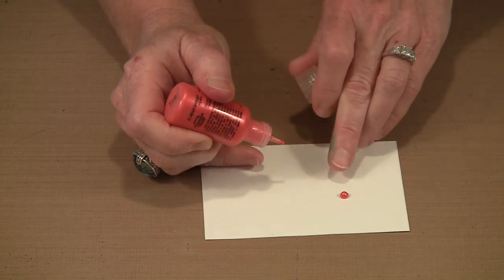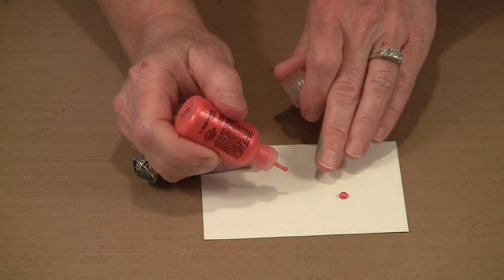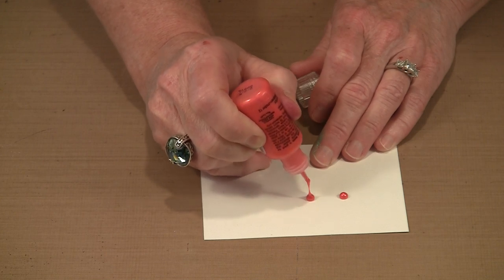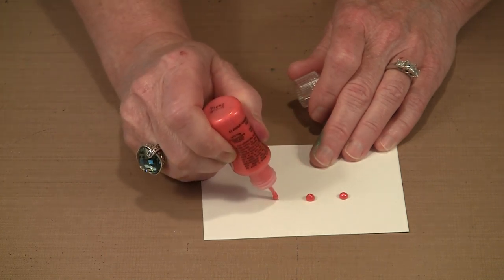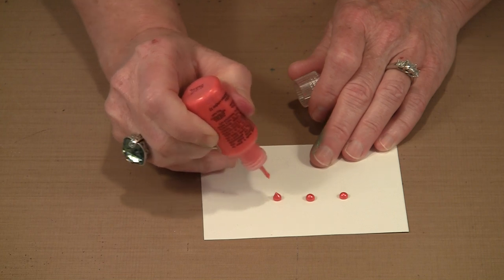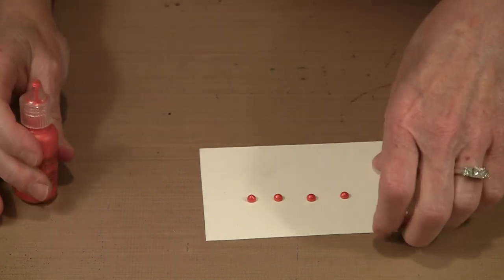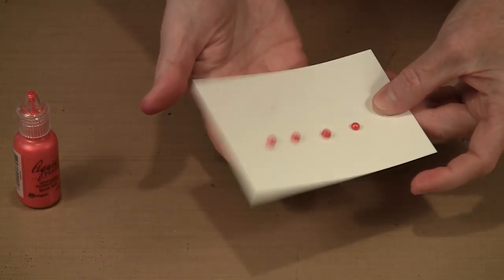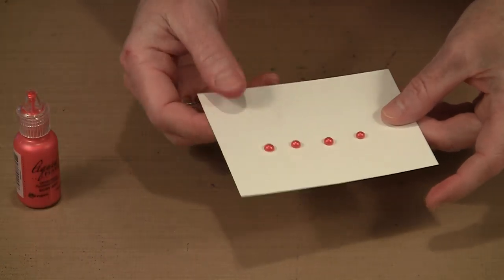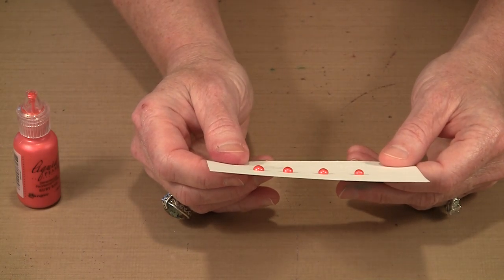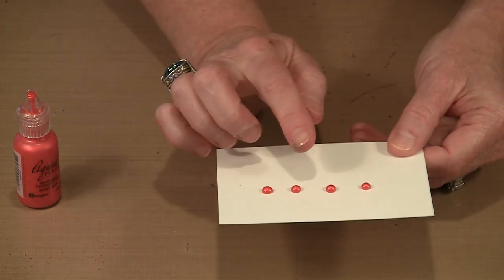You're typically going to get that little peak on there that in some cases will settle back by itself. But what you can do to create really nice little mounds is to just pick the paper up and gently tap the bottom. And that will be enough so that those peaks just settle back into nice little round mounds.